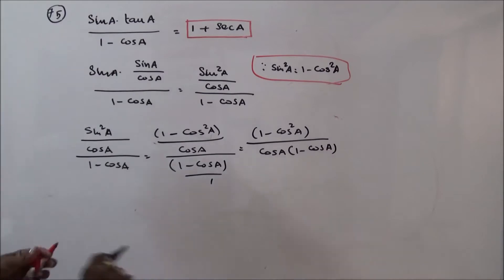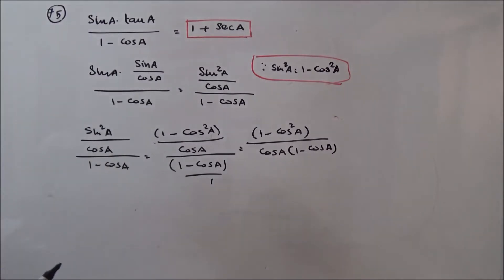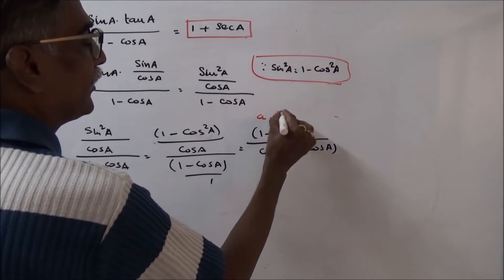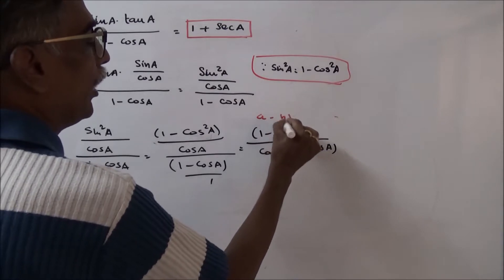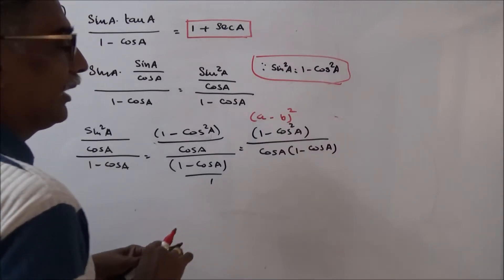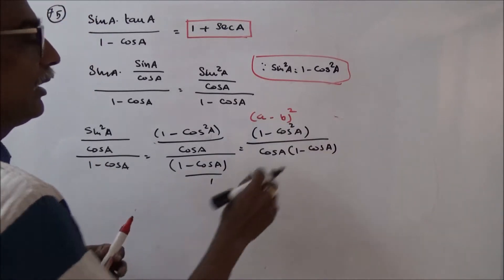Now, 1 minus cos A — notice that 1 minus cos squared A is a difference of squares, that is A squared minus B squared form.